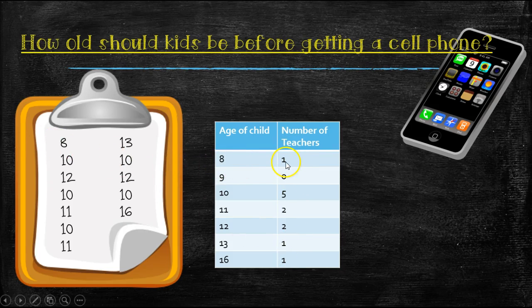So 8, we had one teacher say 8. 9, well, no teachers said 9, so 0 goes there. So 10, well, that was 5 teachers thought 10 was a good age. 11 would be 2. 12 years old, 2 teachers thought that was a good age. 13, just 1. And then we have our outlier down here, which was one teacher thought that 16 years old was the age that you should be before getting a cell phone.